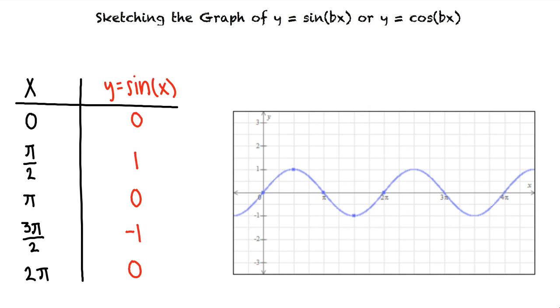The period of the graph is how long it takes for the graph to repeat itself. For the function y equals sine of x the period is 2 pi. This is because from 0 to 2 pi we see one complete wave. Then at 2 pi we see the wave begin again.